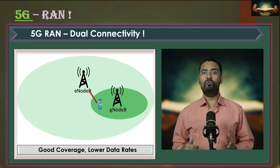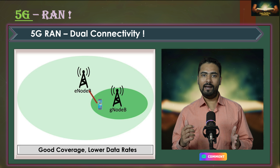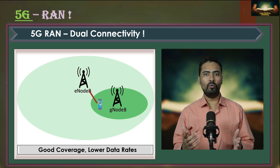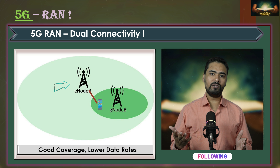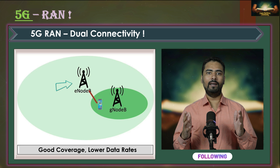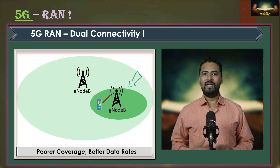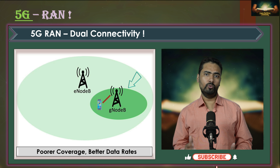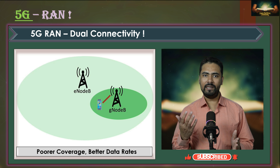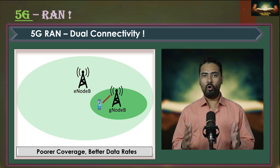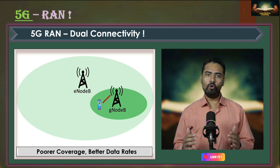Consider a scenario where a 4G eNodeB is providing the main coverage for a user device, and at the same time the UE can also connect to a nearby 5G gNodeB. If the UE only connects to the 4G eNodeB it can benefit from better coverage, but data rates would be relatively low. And if the UE only connects to the 5G gNodeB it can enjoy faster data rates, but may experience weaker coverage or frequent handovers due to the more limited coverage of 5G signals, especially on the higher bands.